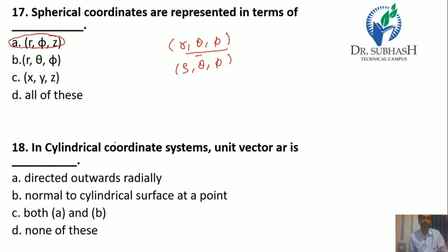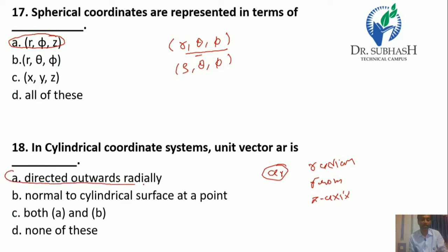Question 18: In a cylindrical coordinate system, the unit vector A_R is — as I mentioned, A_R represents the radial distance from the z-axis. So the answer is A.